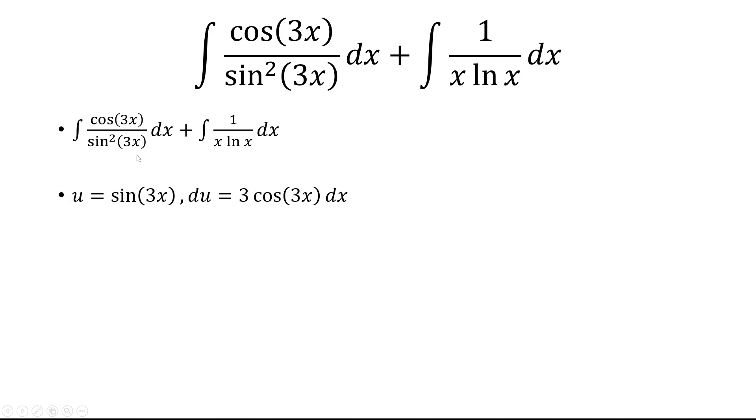We'll do a u-substitution, letting u equal sine 3x, and so du is 3 cosine 3x dx. But I have cosine 3x dx, which means I have to divide both sides by 3.